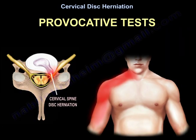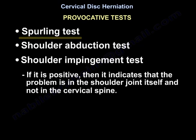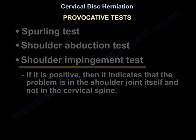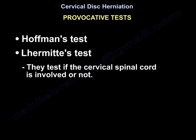There are some other tests for cervical spine radiculopathy called provocative tests: the Spurling test, the shoulder abduction test, and the shoulder impingement test. If the shoulder impingement test is positive, it indicates that the problem is in the shoulder joint itself and not in the cervical spine. The Hoffmann test and the L'hermitte test assess whether the cervical spinal cord is involved.